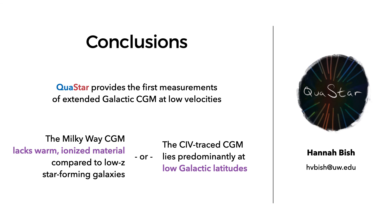These data from Quastar are the first measurements of the extended galactic CGM at low velocities and indicate that either the Milky Way CGM is lacking in warm, ionized material compared to low-redshift star-forming galaxies, or that the carbon-4-traced CGM lies predominantly at low latitudes not covered by the survey. For more details, please see the paper in archive.